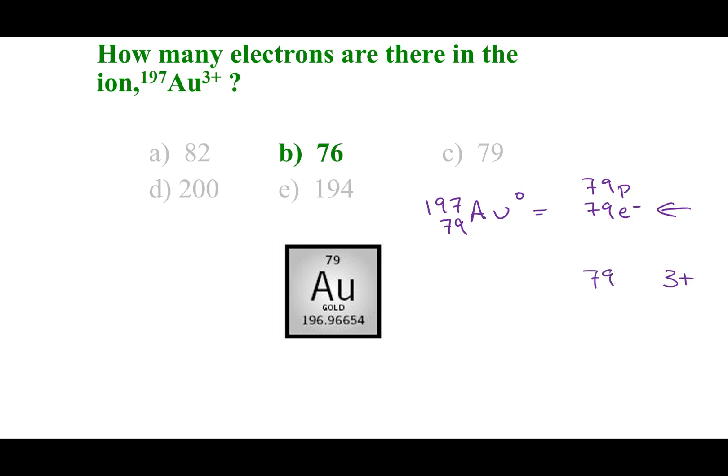So, 79 protons. If I subtract 3 electrons, I'll have 76 electrons. And if I go ahead and add the charges up, so 79 positives plus 76 negatives, I will end up with an overall 3 plus charge. There are 3 more positives than negatives in this configuration. So, the answer here is 76 electrons.